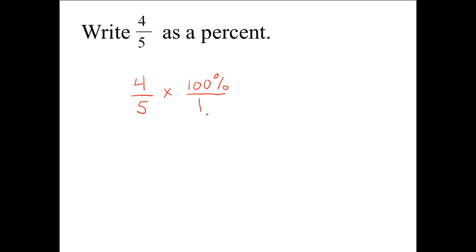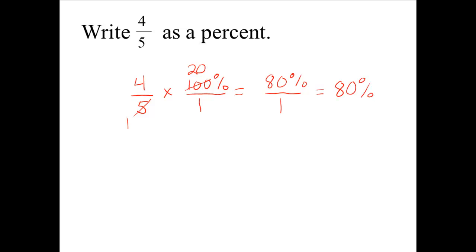We will write 100% over 1 so it looks like a fraction. The numerator 4 has factors of 2 and 4, but there are no matching factors in the denominators. However, 100 and 5 share a common factor of 5, so we divide that numerator and denominator by 5: 100 divided by 5 is 20, and 5 divided by 5 is 1. We multiply numerators: 4 times 20 is 80%, and the denominators give 1. Anything divided by 1 is itself, so 4 fifths as a percent is 80%.